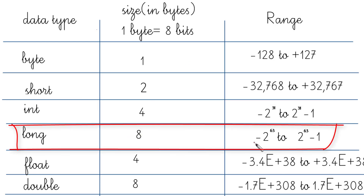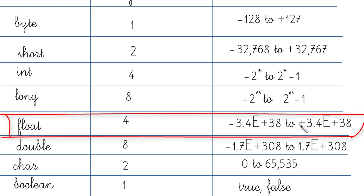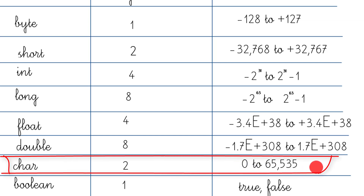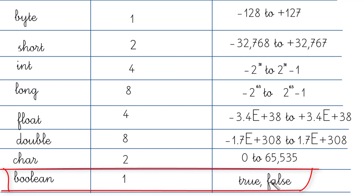Similarly, long occupies 8 bytes = 64 bits, so its range is -2^63 to 2^63 - 1. For float, the range is -3.4E+38 to +3.4E+38. For double, it is -1.7E+308 to +1.7E+308. For char, the range is 0 to 65,535 characters. For boolean, the range is simply true or false — just two values.